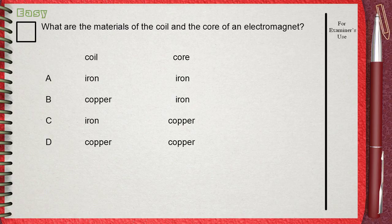The first choice is iron and iron. The second choice B is copper and iron. The third choice C is the iron as the coil and copper as the core. The last choice D is copper as the coil and copper as the core.